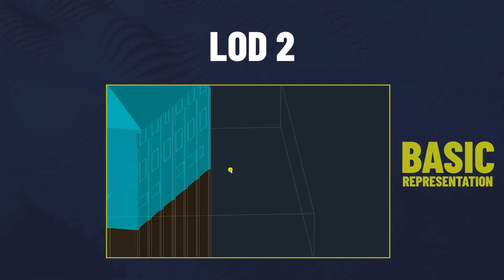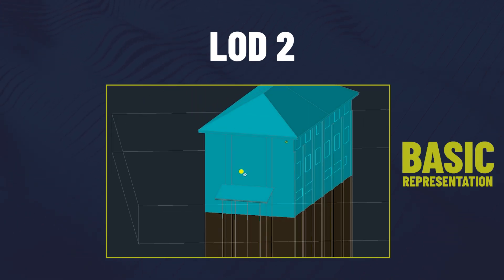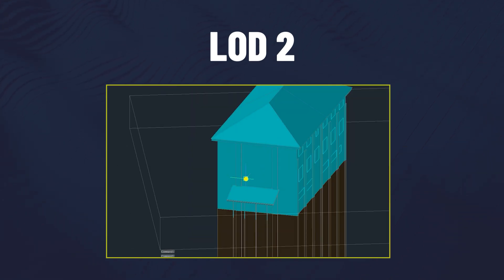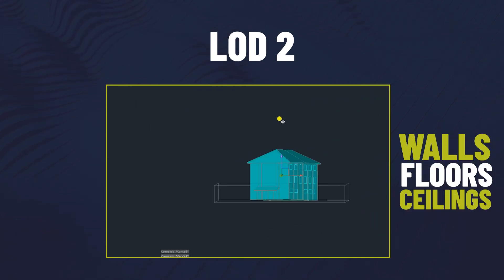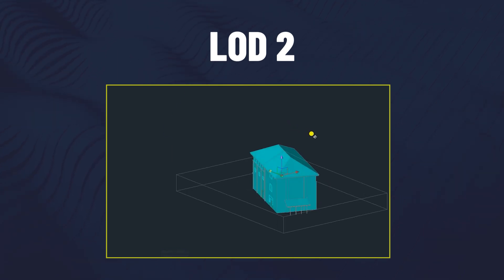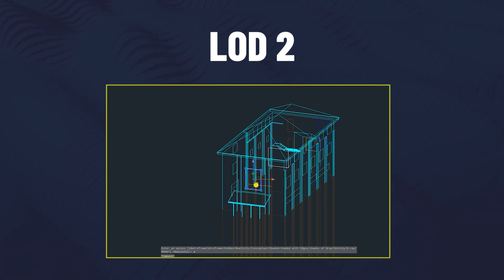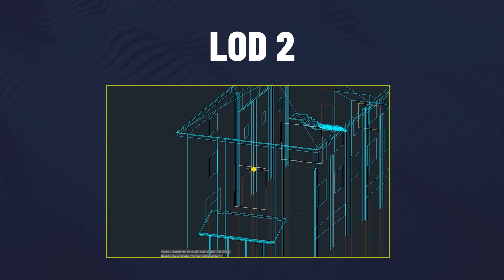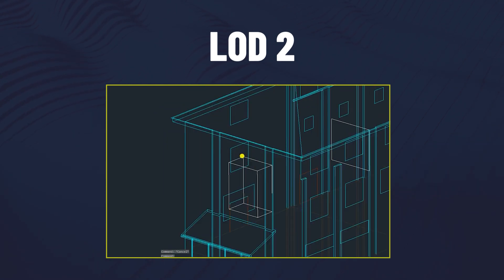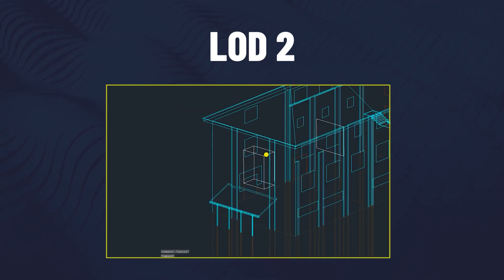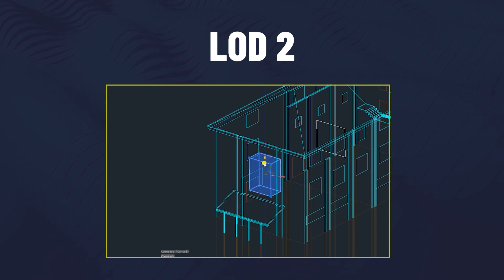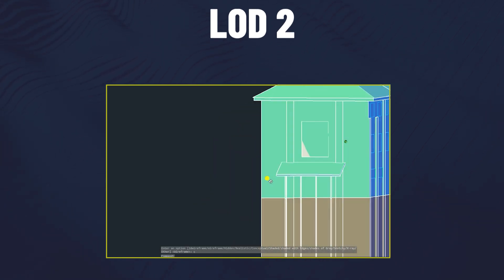LOD2 is a basic representation. By LOD2, the focus is on foundational elements of the structure. This includes walls, floors, ceilings, columns, beams, windows and doors, represented as simple openings reflecting only the external reveals. This level is comparable to a 1 to 100 survey and is typically used for planning applications, project visualisations and rights of light surveys. It provides just enough information for broad decision making but keeps the model efficient and easy to handle.